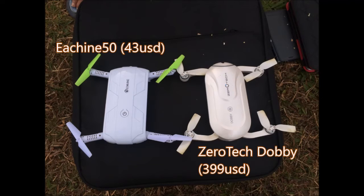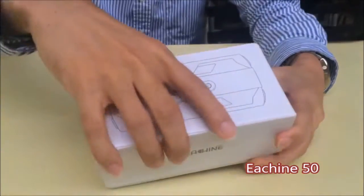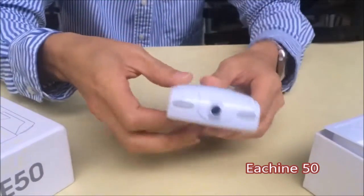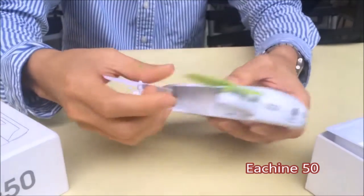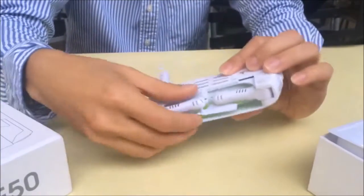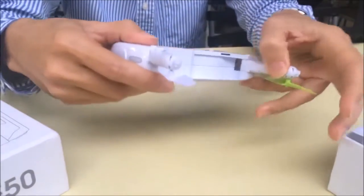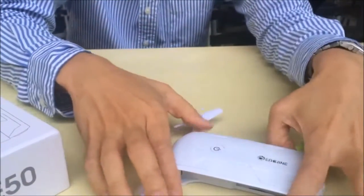Now there are two other selfie drones similar in size but with a big difference in their price. At 43 USD, this Asian 50 selfie drone has altitude hold with real-time Wi-Fi video. The chip barometer does a pretty good job at holding the altitude, but the Wi-Fi control and video works well up to 20 meters only.